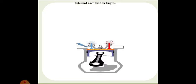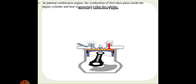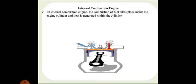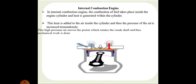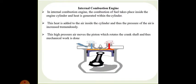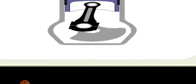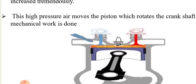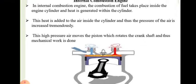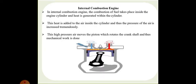Then comes the internal combustion engine. This is the most common type of engine used nowadays in automobiles. In the internal combustion engine, combustion of the fuel takes place inside the engine cylinder and heat is generated within the cylinder. This heat is added to the air inside the cylinder and the pressure of the air increases tremendously. This high pressure moves the piston, which rotates the crankshaft and thus mechanical work is done. You can observe the crankshaft connected with the piston via the connecting rod, connected to the camshaft which helps valve timing, and thus the fuel is ignited.